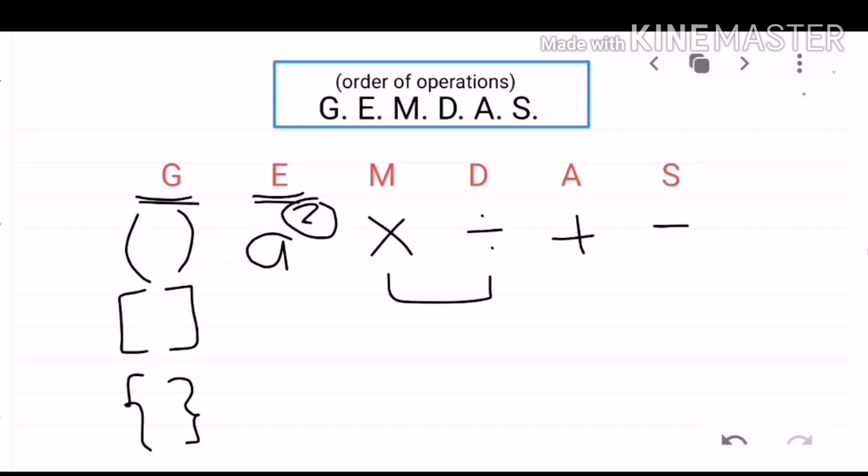Like, for example, you have 2 divided by 1 times 2. Instead of MULTIPLYING first, you must divide first 2 and 1. And that is 2 times 2 is equal to 4. Follow?